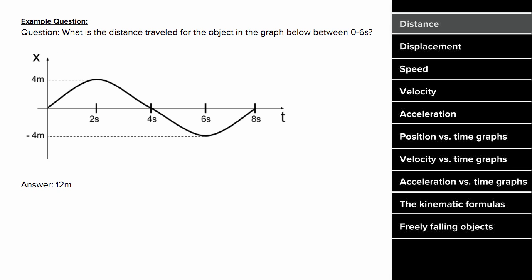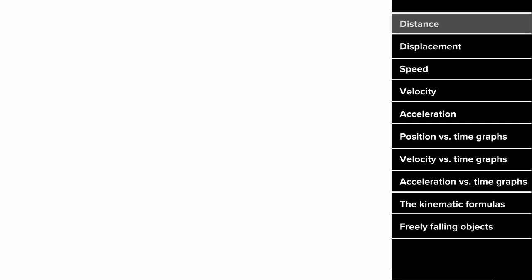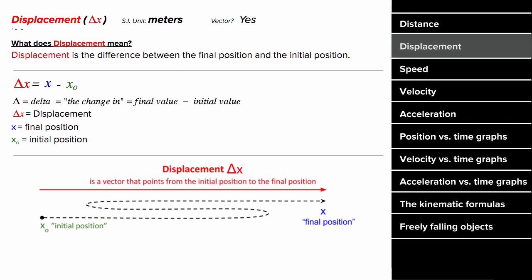What does an example problem for distance look like? Let's say you had this graph, and the question was: what's the distance traveled for the object in the graph between zero and six seconds? Between zero and two seconds, the object moved forward four meters. Between two and four seconds, the object moved backward four meters. And between four and six seconds, the object moved backward another four meters, which means the total distance would be four plus four plus four, giving you 12 meters of distance traveled.